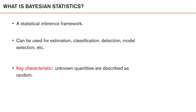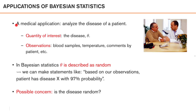For example, the same basic theory and methods can be used for estimation, classification, detection, and model selection, and so forth. The key characteristic is that whatever problem we are facing, the unknown quantities are described as random. This could, for example, be the type of disease of a patient, the transmitted message in a communication system, the temperature in a cylinder in an engine, or the intention of a driver in a traffic situation.